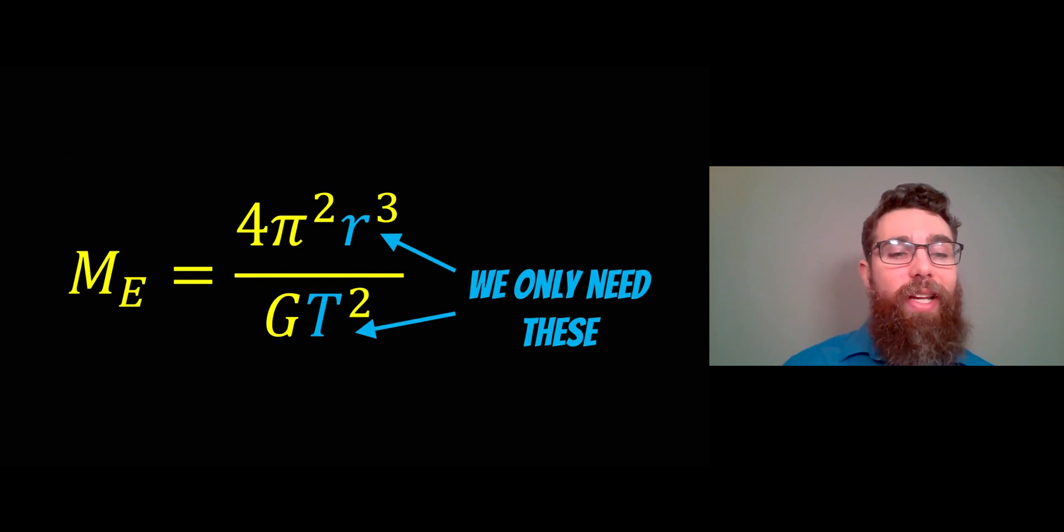If we rearrange for the mass of the Earth, we then have this equation M_E = 4π²r³/GT². There are two things we need to know: one is the orbital period T, and the other is the separation between the two objects, which is r.